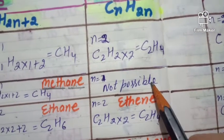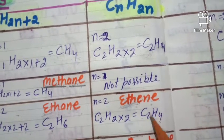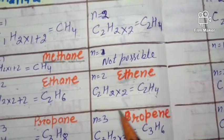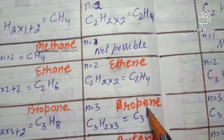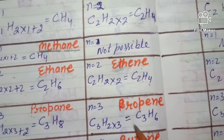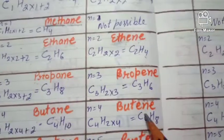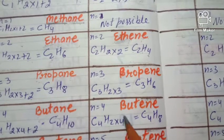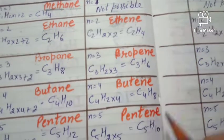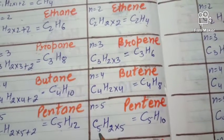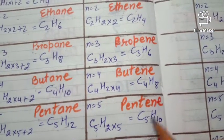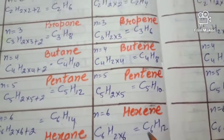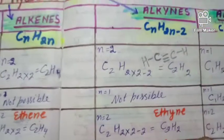For the alkene series, the first member is not possible at n = 1, so the series starts at n = 2. For n = 2: C2H4 = ethene. For n = 3: C3H6 = propene. For n = 4: C4H8. For n = 5: C5H10 = pentene. For n = 6: C6H12 = hexene. These form the homologous series of alkenes using root words and the suffix '-ene.'